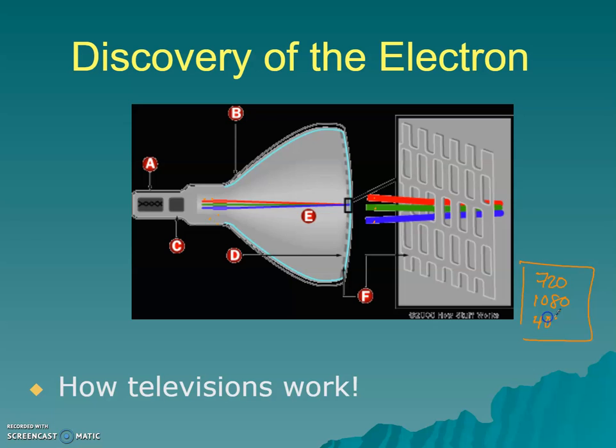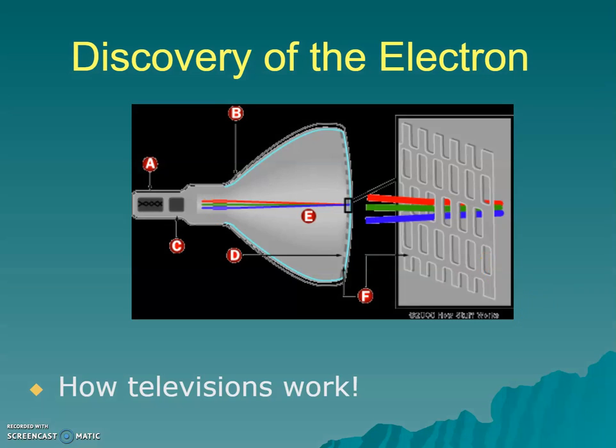Now we're up to 4K, which is 4,000. So basically what it did is these number of pixels got smaller and smaller and smaller, and that's what makes that crystal clear, wonderful picture of what you have. So thank you, Thompson. You're the one that made TV possible.